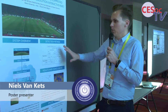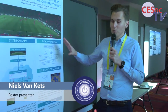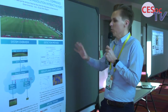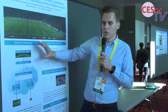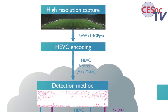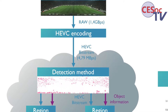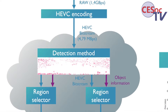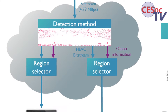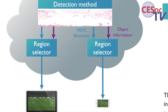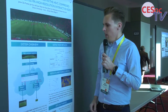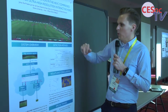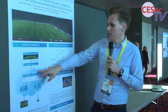What we're showing is moving object detection in the compressed domain. We want to detect objects in a very high resolution capture, but not in the pixel domain, because the pixel domain is too much bandwidth — it consists of almost 1.4 gigabytes per second, which is too much to process. So we want to do the detection after the encoding step, using the motion vectors within the HEVC bitstream.